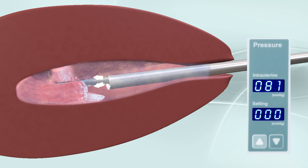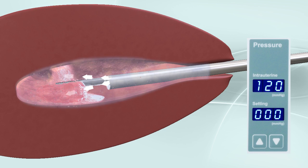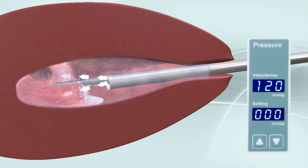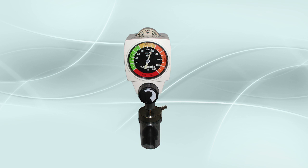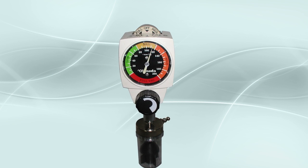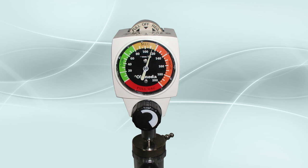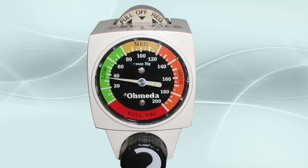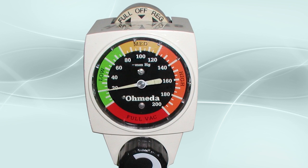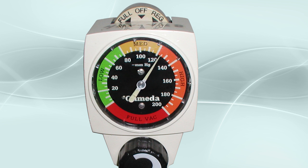This may necessitate periodic adjustments of increased pump pressure to maintain the desired uterine distention. Each fluid pump performs differently, and therefore an adjustable suction source should be used during the Myosure procedure to provide vacuum pressure adjustments based on the inflow performance of the fluid pump used.